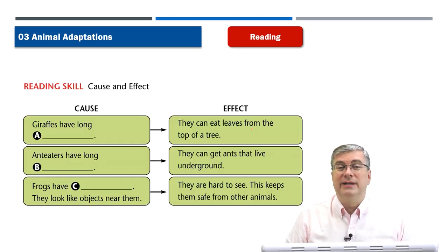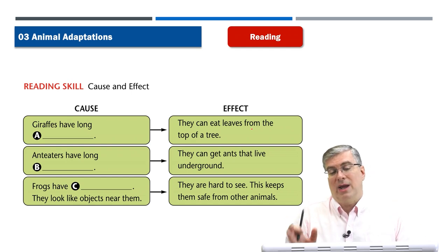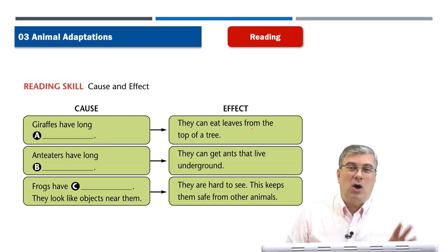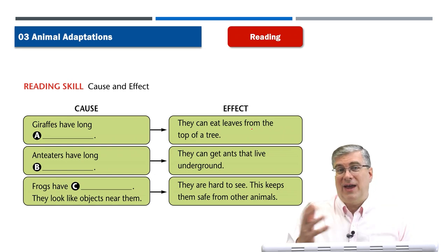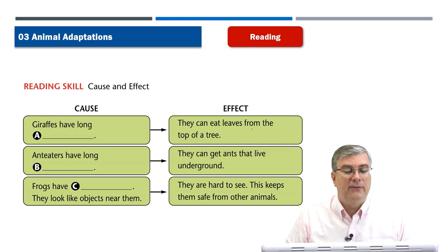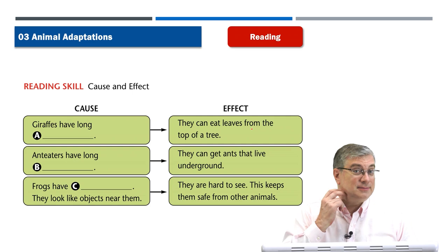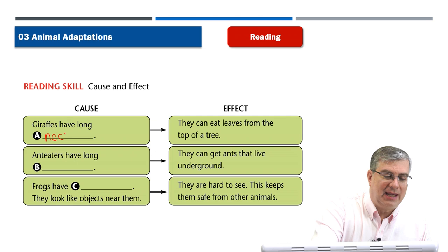How is this reading organized? On the left side, we have causes — the adaptations that these animals have. On the right side, we have effects — how it helps them live or be successful in their environment. On the left side, the first one: giraffes have long what? Remember what giraffes are famous for? They have long necks — N-E-C-K-S.